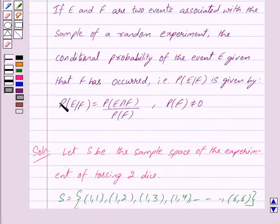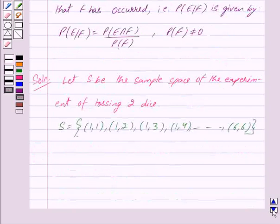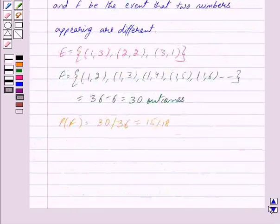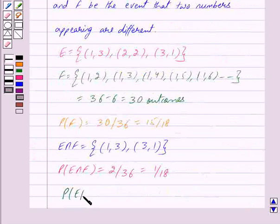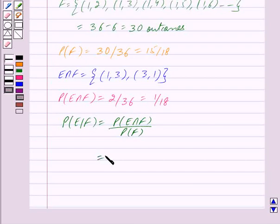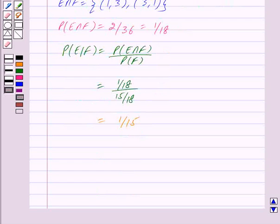By the conditional probability formula, probability of E given F is equal to probability of E intersection F upon probability of F. So probability of E given F equals (1/18) divided by (15/18), which equals 1 upon 15. So we have got our answer as 1 upon 15. Hope you have understood the solution. Bye and take care.